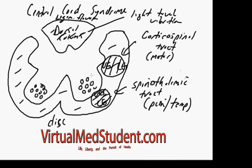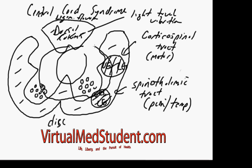Now that we understand the anatomy, we can better appreciate the symptoms. The disc and ligamentum flavum pinch the middle of the cord, causing damage mostly in the central area. However, edema and secondary injury expand the initial zone of injury to include a broader surrounding region.